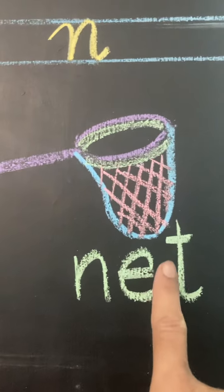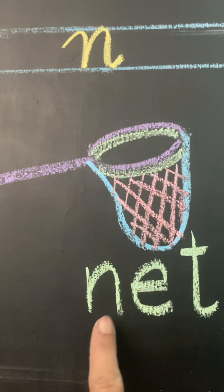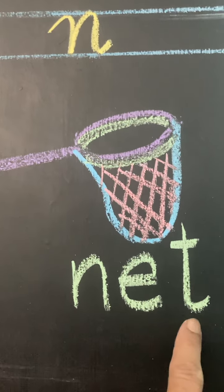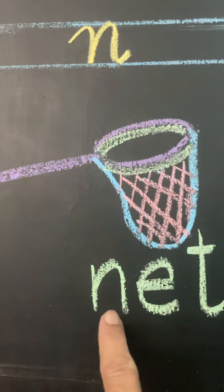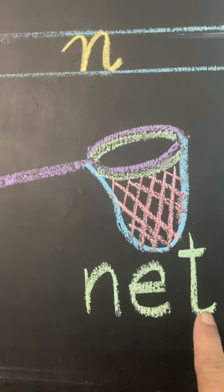Let's see what the next picture is of. It is of net. This is a net. N, N, net.